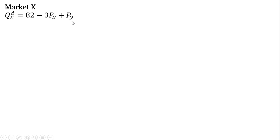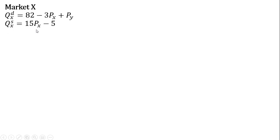As the price of good Y goes up, people want to buy less good Y and they'll seek out substitutes. Good X being a substitute, people will buy more good X following an increase in the price of good Y. Here is the quantity supplied equation for good X. Notice that quantity supplied and the price of good X are positively related — just an upward sloping supply curve for good X.